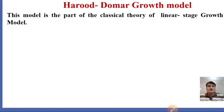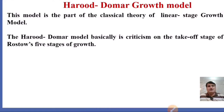One part was Rostow's five stages of growth, and the second part of the linear stage growth model is the Harrod-Domer growth model. The Harrod-Domer growth model is basically a criticism on the takeoff stage of Rostow's five stages of growth.